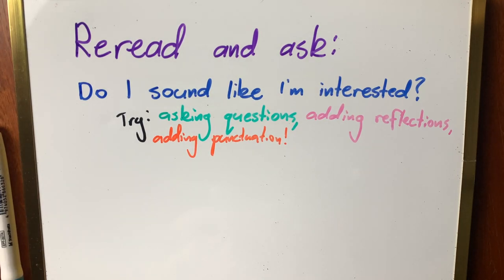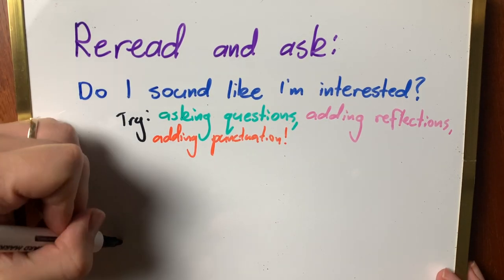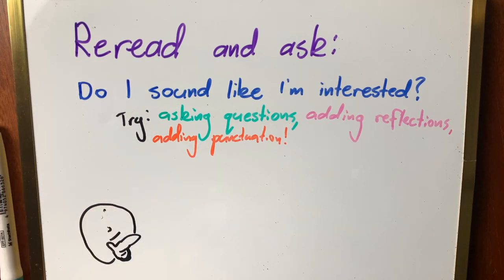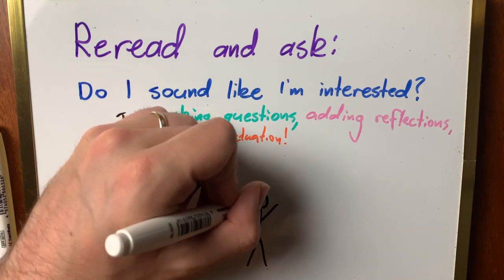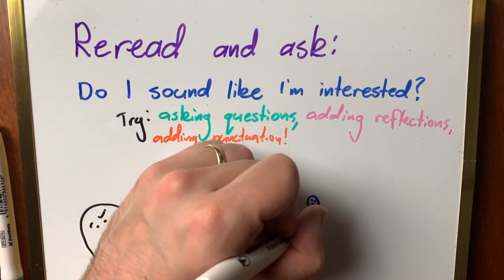Think about something you're excited about and how you would tell someone about it. Use that in your writing. You might ask questions to draw them in. You might be excited and use an exclamation mark here and there.